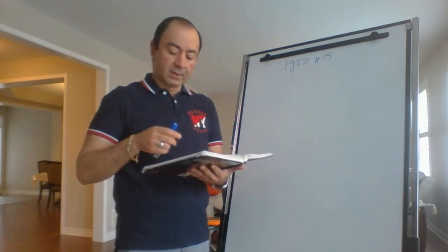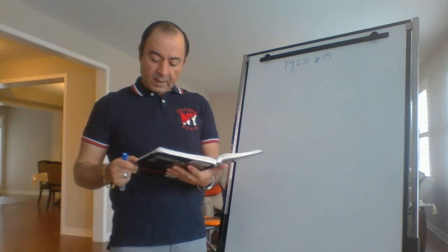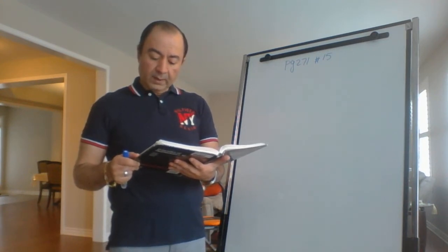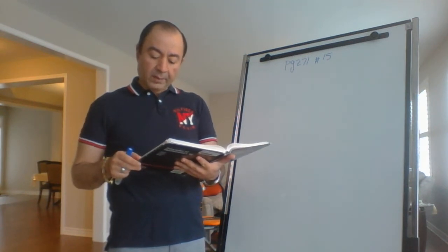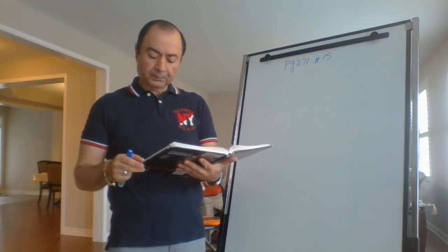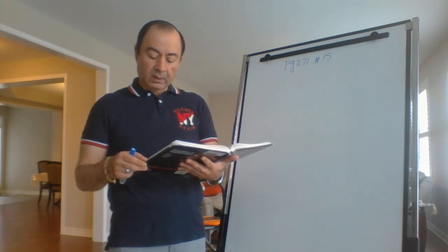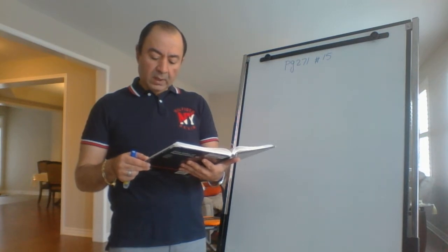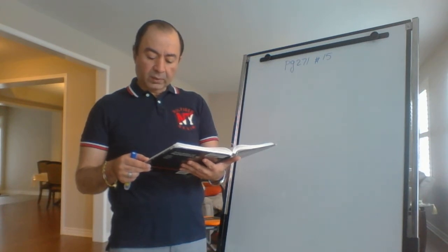Question number 15 on page 271 says the cost in dollars of operating a machine per day is given by the formula C in terms of T, where T is the time in hours the machine operates. What is the minimum cost of running the machine, and for how many hours must the machine run to reach the minimum cost?